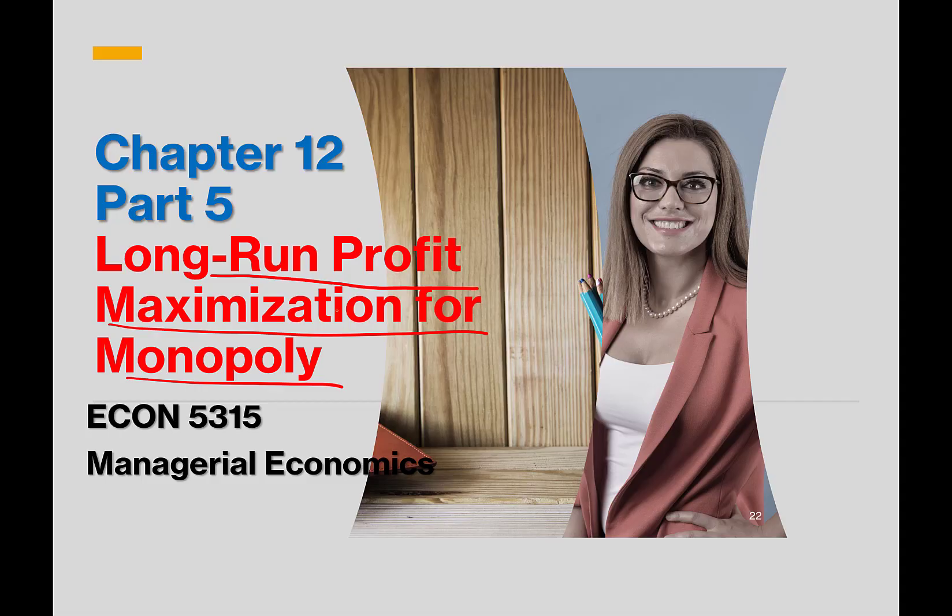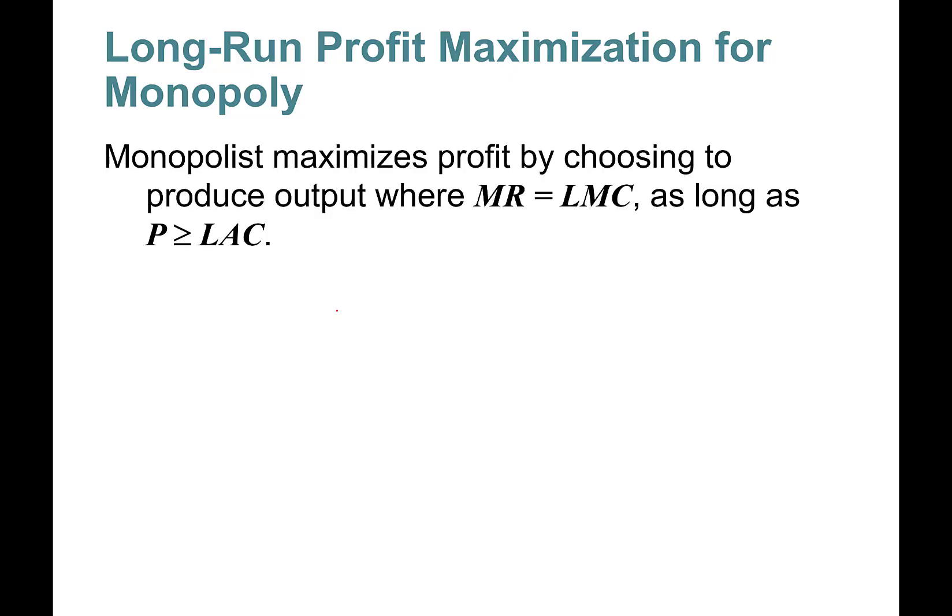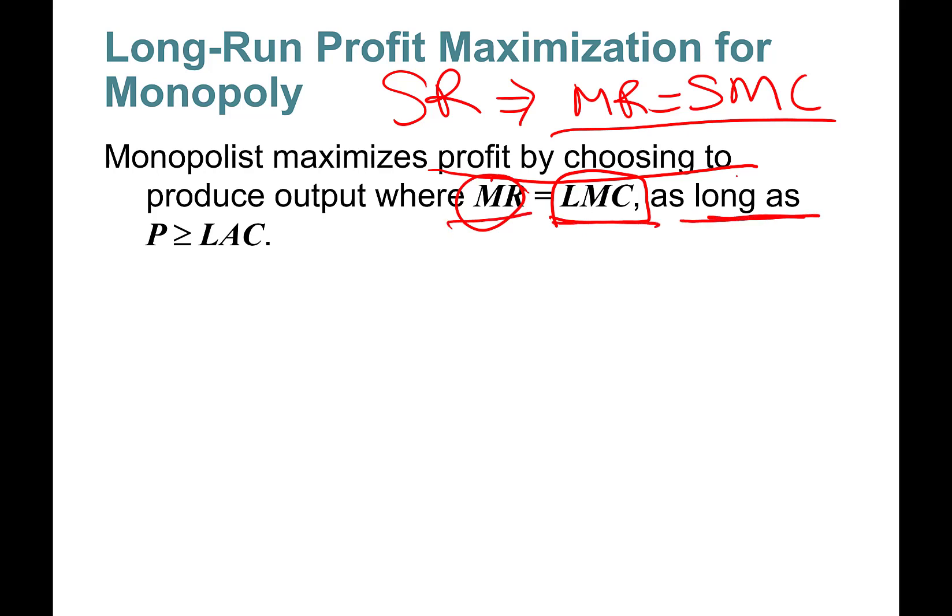In Part 4, profit maximization for monopoly: monopolist maximizes profit by choosing marginal revenue equal to long-run marginal cost curve. In the short run, we had marginal revenue equals short-run marginal cost curve. In the long run, marginal revenue equals long-run marginal cost curve, as long as price is greater than or equal to long-run average cost curve.